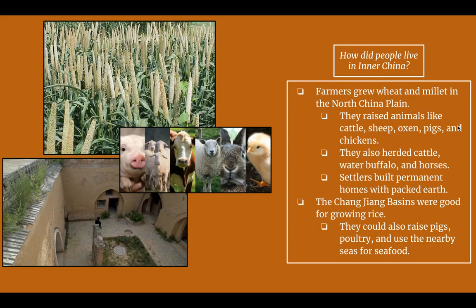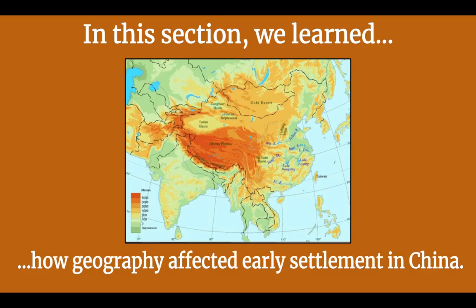Inner China is the ideal place to live in ancient — and probably modern — China. Farmers grew wheat and millet in the North China plain and raised animals like cattle, sheep, oxen, pigs, and chickens. They would also herd cattle, water buffalo, and horses. Settlers built permanent homes with packed earth. The Changjiang basins were good for growing rice specifically, but residents could also raise pigs and poultry, and use the nearby seas for seafood. In this section, we learned how geography affected early settlement in China.